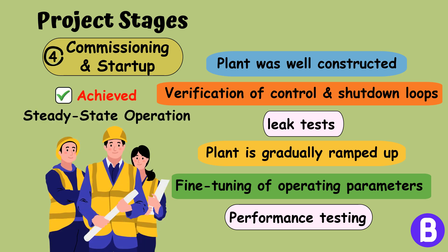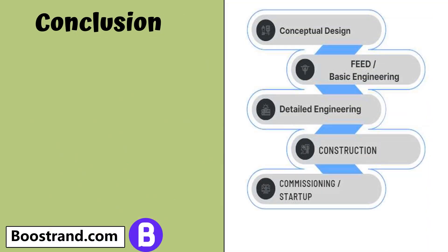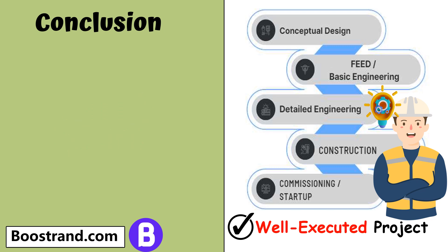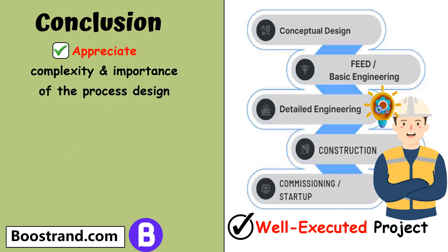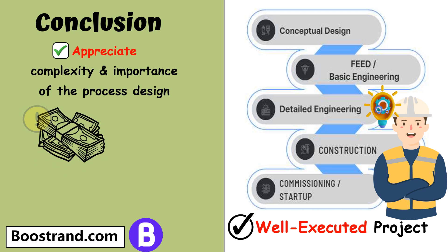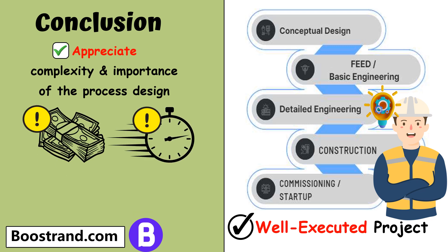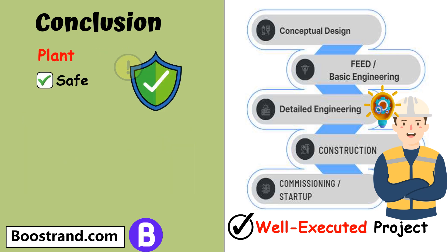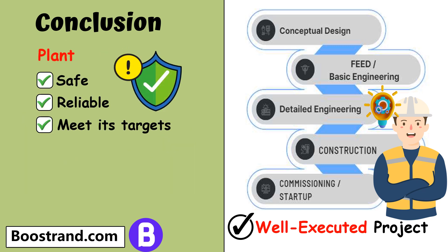In conclusion, the process design stages play a crucial role in the successful execution of any engineering project. By understanding each project stage, engineers and project managers can appreciate the complexity and importance of the overall process design. They can identify potential issues early on, reducing the risk of costly errors and delays during construction and start-up, and work together to ensure that the final plant is safe, reliable, and capable of meeting its performance targets.